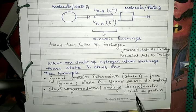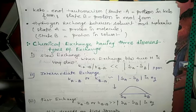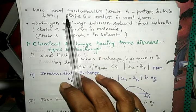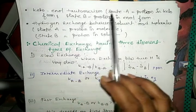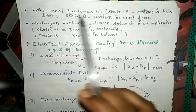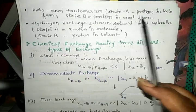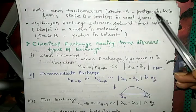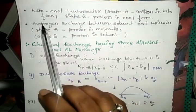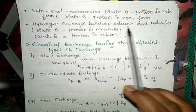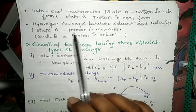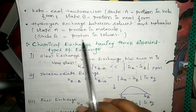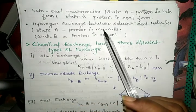Another example is slow conformational change in molecules. When a slow conformational change in a molecule takes place, chemical exchange also happens. Another example is keto-enol tautomerism. In keto-enol tautomerism, state A is the proton in the keto form and state B is the proton in the enol form, and they undergo hydrogen exchange. A further example is hydrogen exchange between solvent and molecule, where state A is the proton in the molecule and state B is the proton in the solvent.